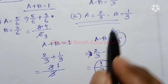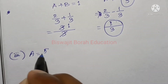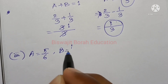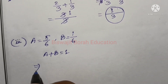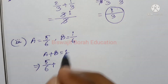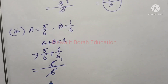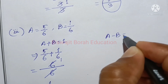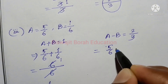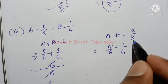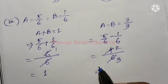Next, option 3: the values are 5 by 6 and 1 by 6. If a plus b equals 1, then a equals 5 by 6 and b equals 1 by 6. Checking a minus b: 5/6 minus 1/6 equals 4/6 equals 2 by 3. So a equals 5 by 6 and b equals 1 by 6 also satisfies the condition.